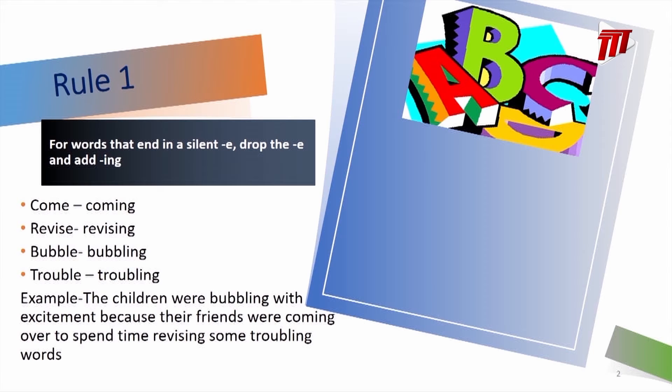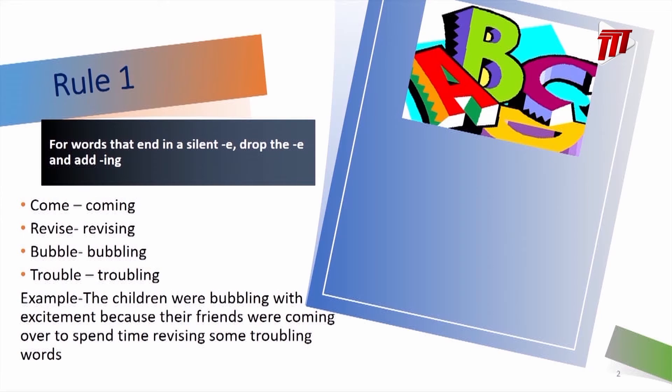The same happens for the words 'revise,' 'bubble,' and 'trouble.' Remember, when adding ING to words ending with the silent E, we drop the E and then add ING. If we were to use these words in a sentence: 'The children were bubbling with excitement because their friends were coming over to spend time revising some troubling words.' By using the rule accurately, you help to produce more interesting sentences that someone would like to read.